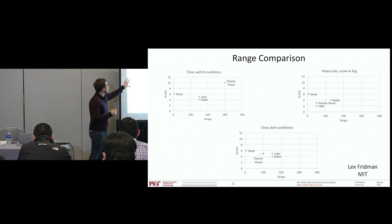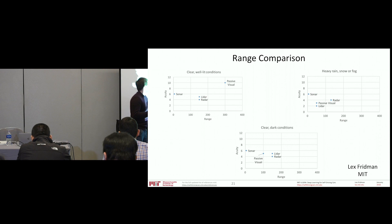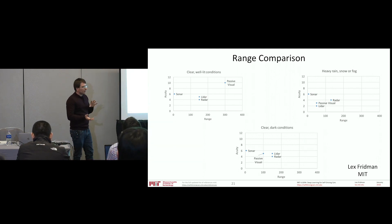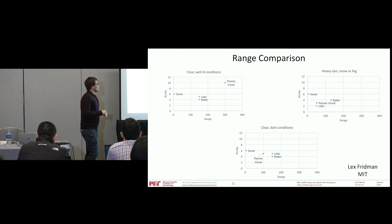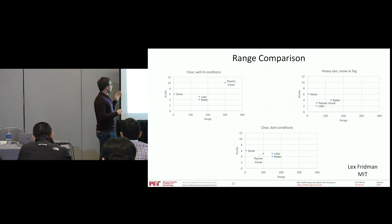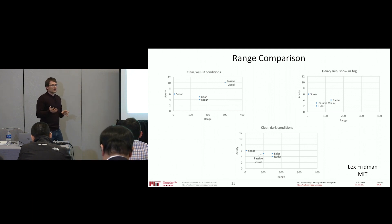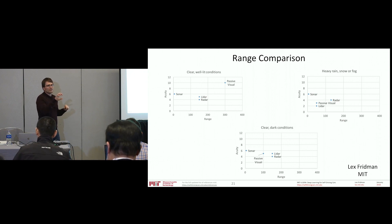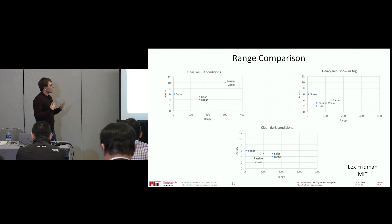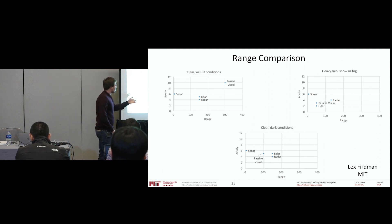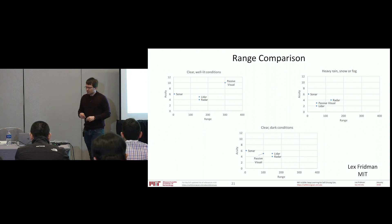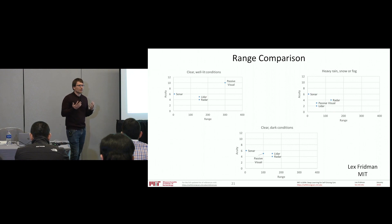Another way to break this down is to look at clear well-lit conditions versus heavy rain or fog versus clear dark conditions — that can really change the balance of capabilities between sensors. In clear, well-lit conditions, cameras are great: they can see far, they have high acuity. But cameras really struggle in rain or fog, and in dark conditions sonar and LiDAR don't care, but cameras struggle a lot more.